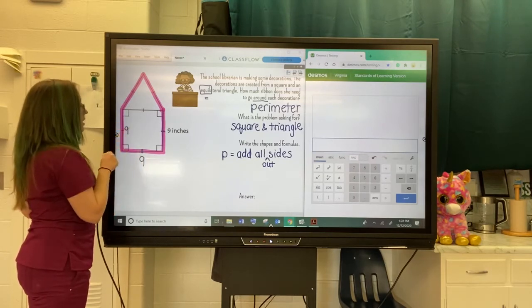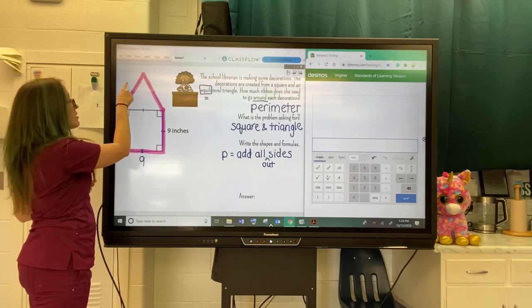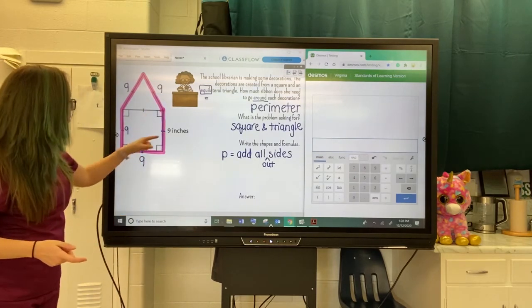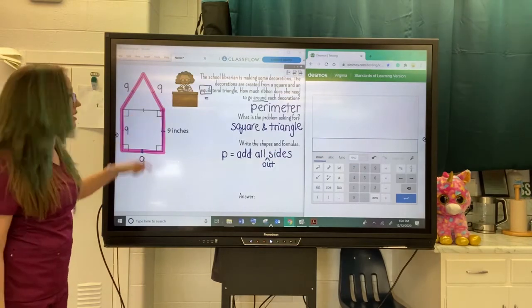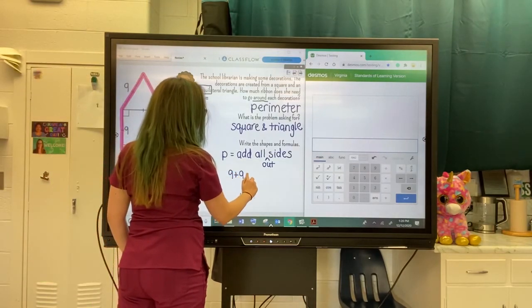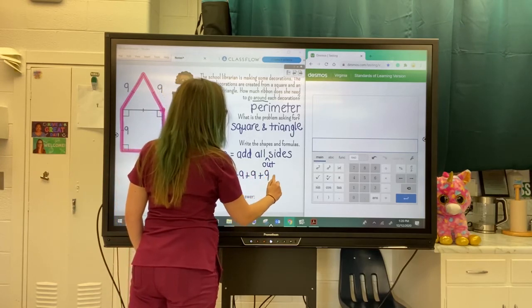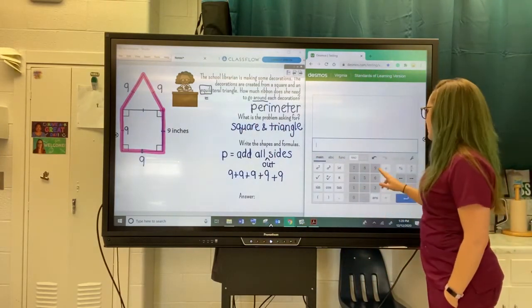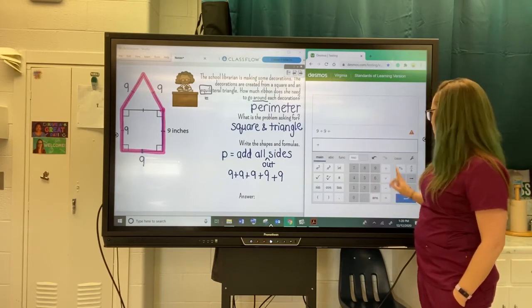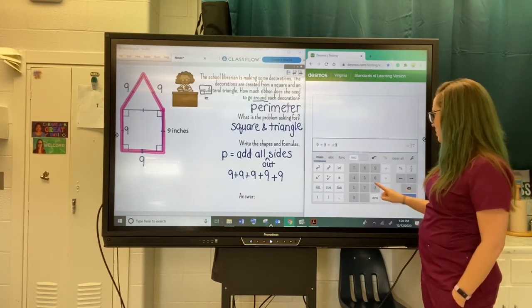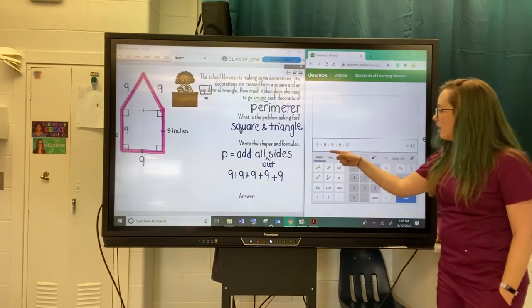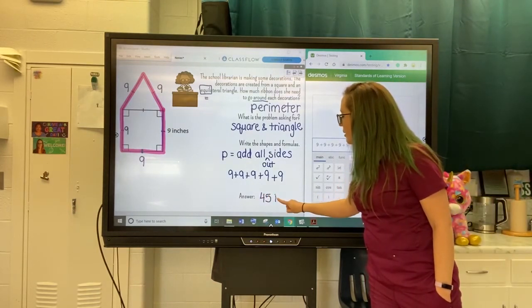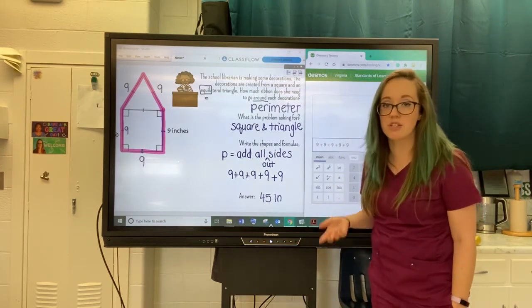So when I find the perimeter, I'm just going to go around and add all of these nines together. I have five sides and each side is nine inches. I know you could do five times nine, but I'm just going to add. We're doing it in Desmos. And I get a total of 45 inches. So our librarian needs 45 inches of ribbon.